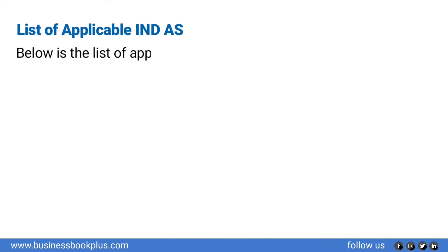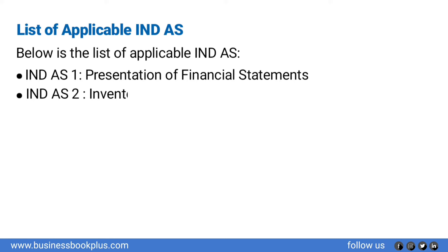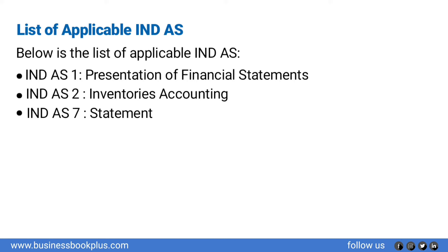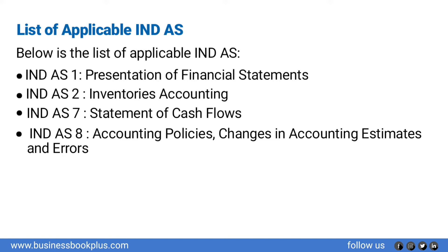Below is the list of applicable Indian Accounting Standards: Ind AS 1 — Presentation of Financial Statements. Ind AS 2 — Inventories Accounting. Ind AS 7 — Statement of Cash Flows. Ind AS 8 — Accounting Policies, Changes in Accounting Estimates and Errors. Ind AS 10 — Events After the Reporting Period.